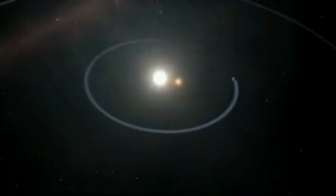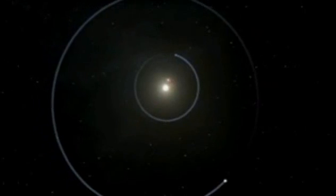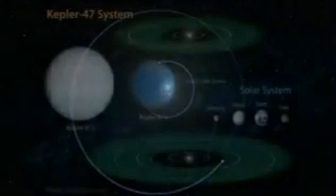It orbits its host star every 303 days, placing it in the so-called habitable zone. This is the region in the planetary system where liquid water could exist on the surface of an orbiting planet. While not a world thought to be hospitable for life, Kepler 47 C is the first known circumbinary planet found in the habitable zone of its stars.